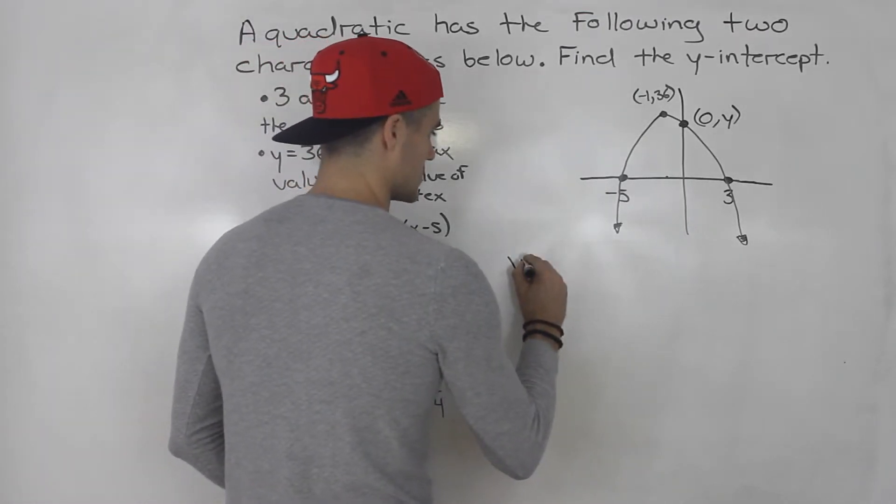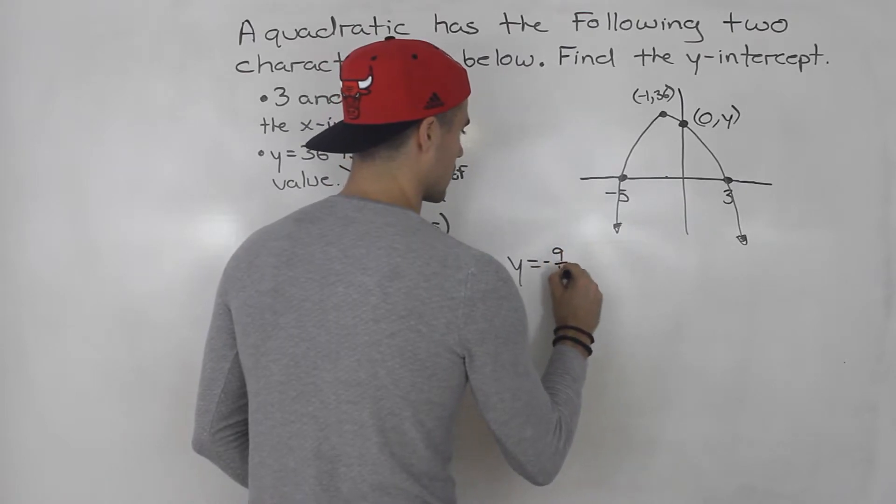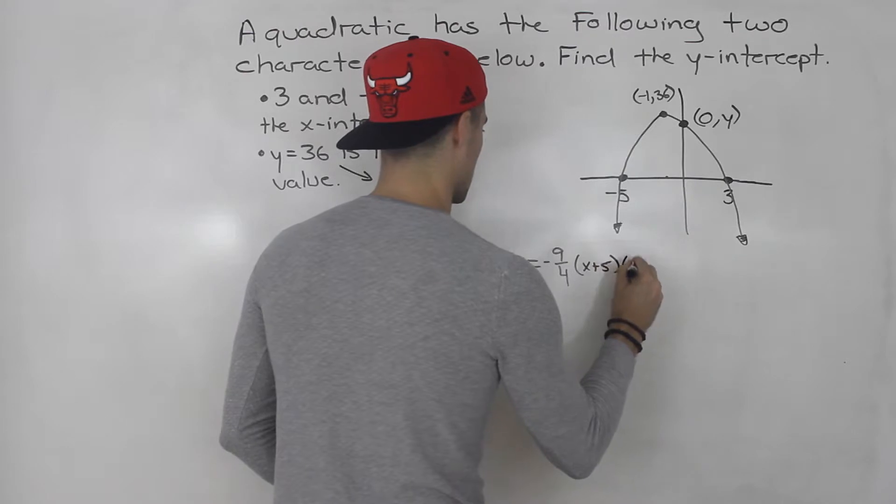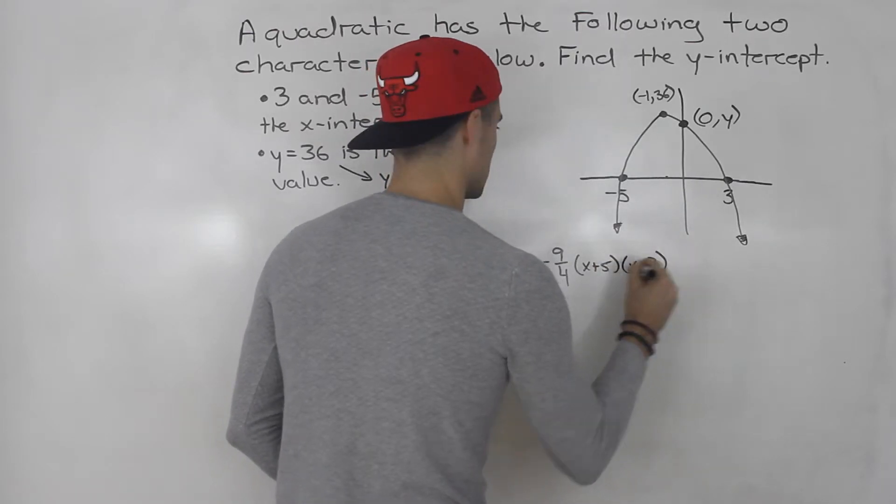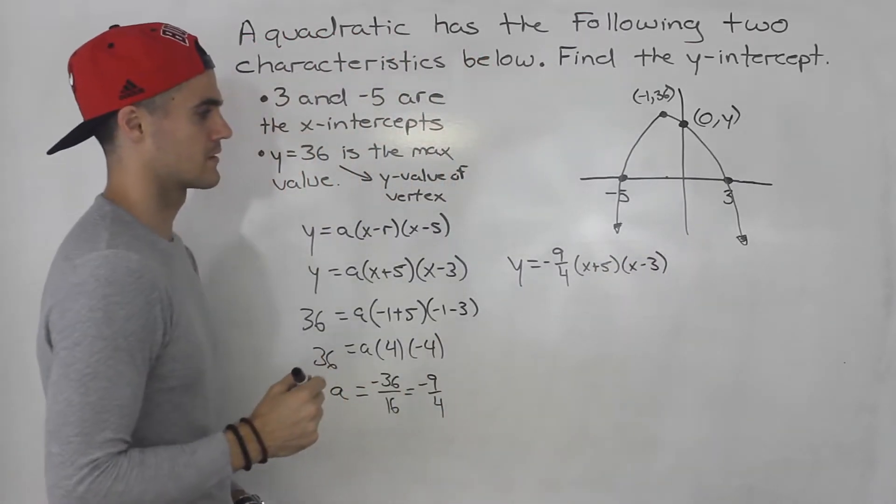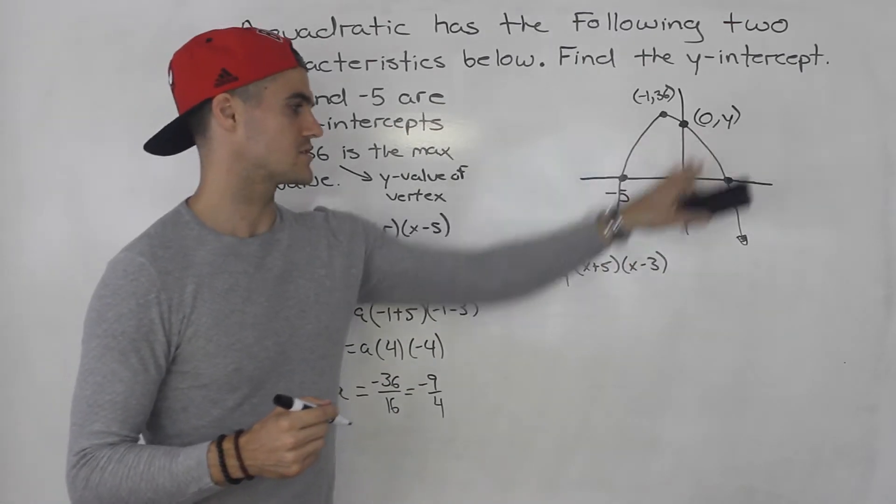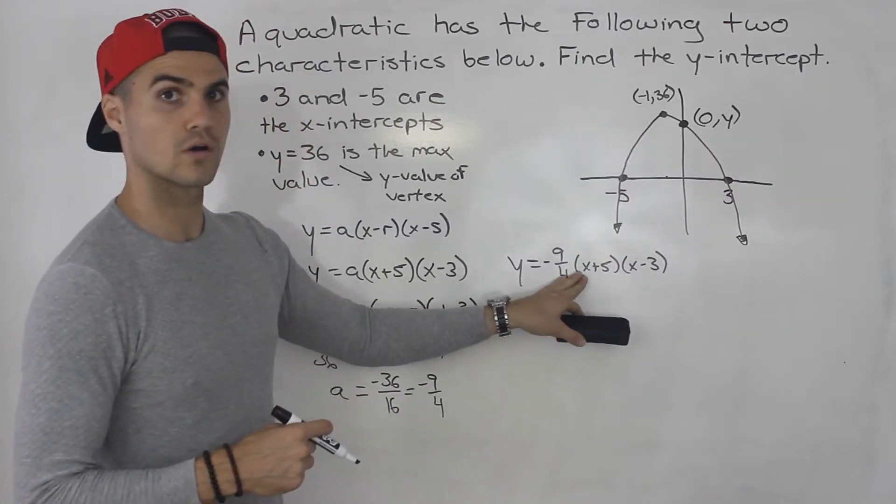So, the equation is y equals negative 9 over 4, x plus 5, x minus 3, like that. And now that we have the equation for this parabola, we can find this y-intercept by plugging in 0 for x.